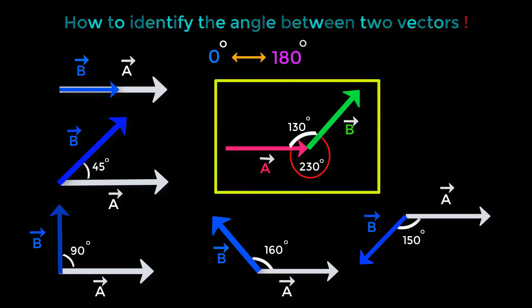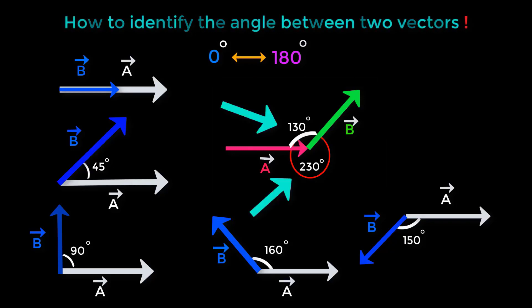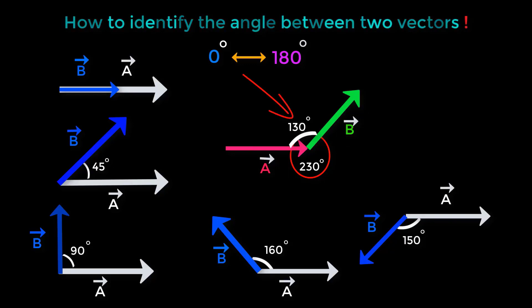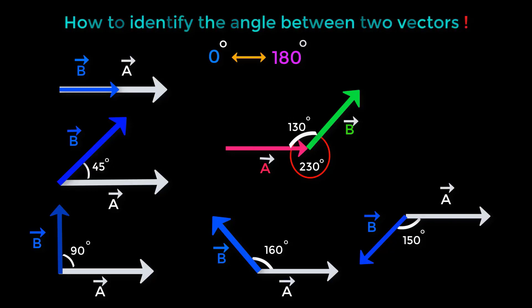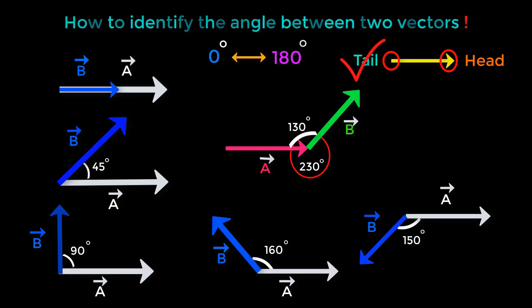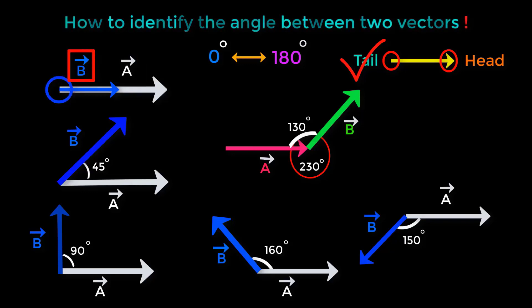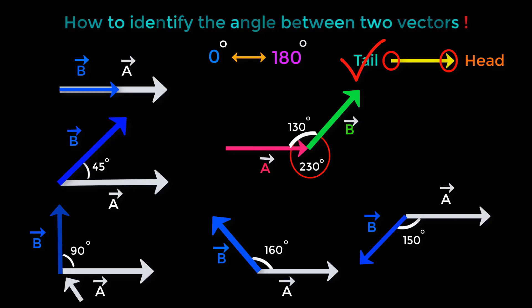If I ask you between these two angles which angle will be the angle between vector A and vector B, don't say the 130-degree angle will be the angle between these two vectors. Remember, the angle between two vectors is the angle formed at the intersection of their tails only — not tail to head or head to tail. The tail of vector A intersects with the tail of vector B, and similarly this tail intersects with this tail, this tail with this tail, and this tail with this tail.